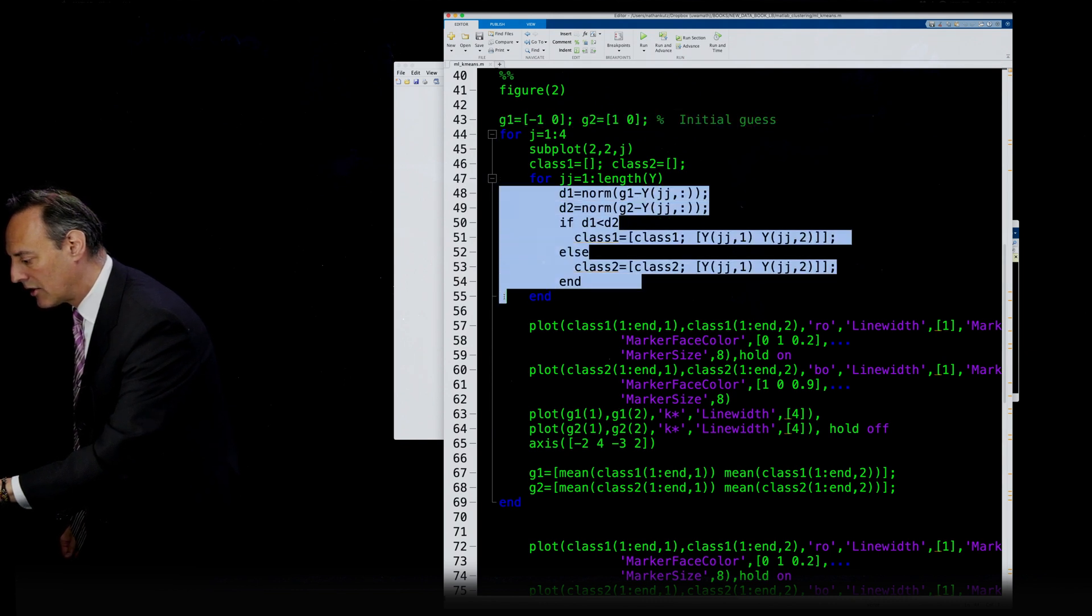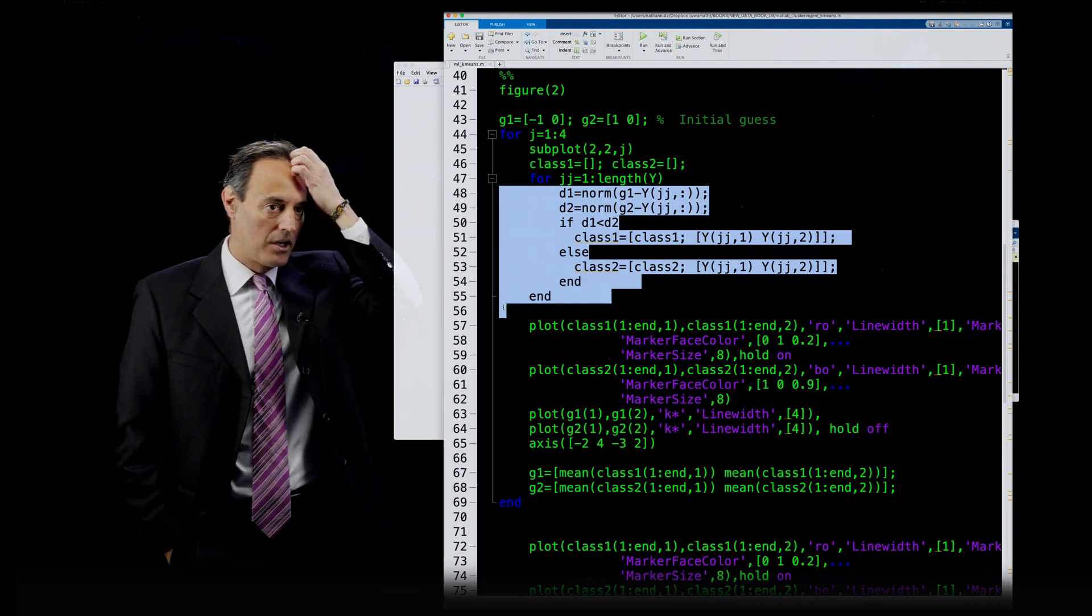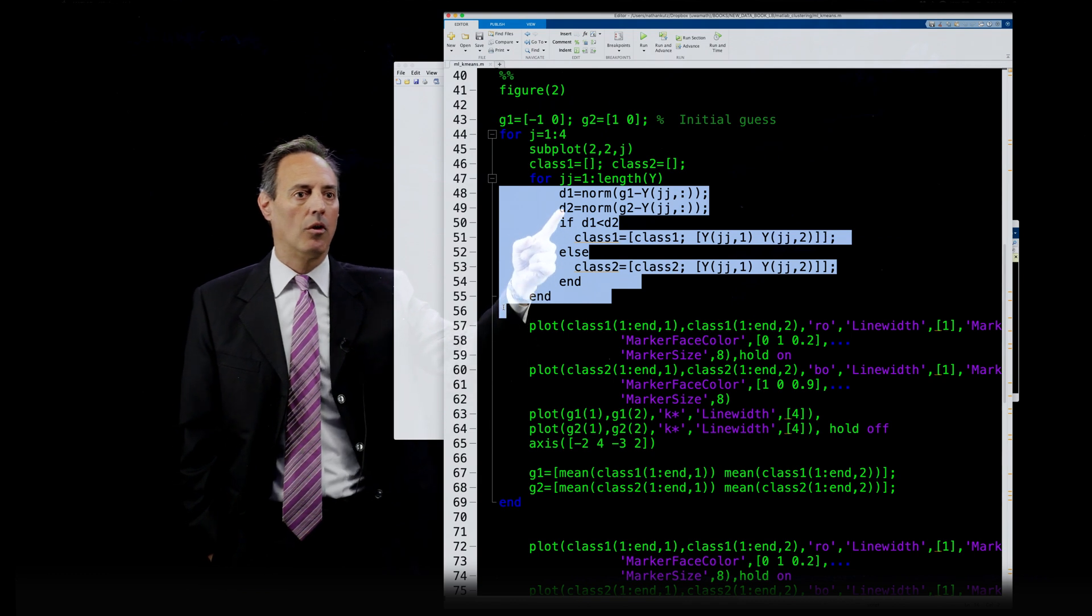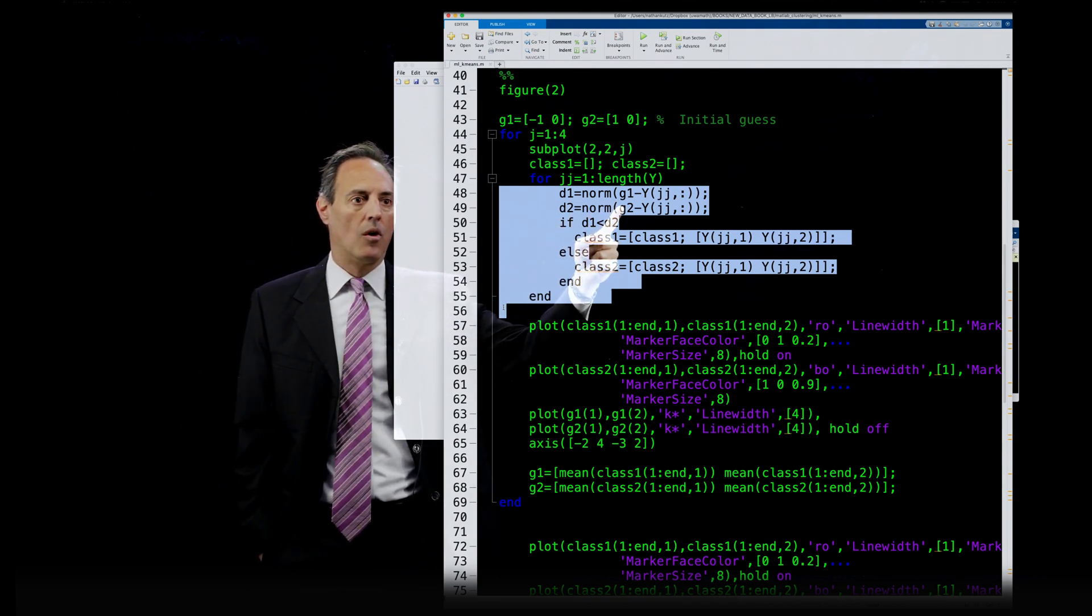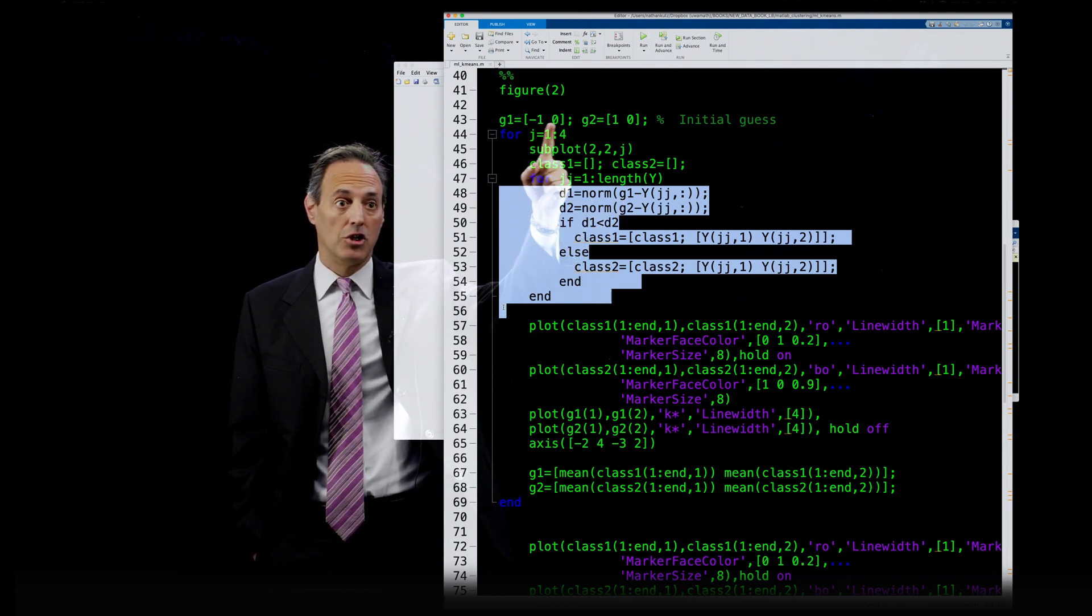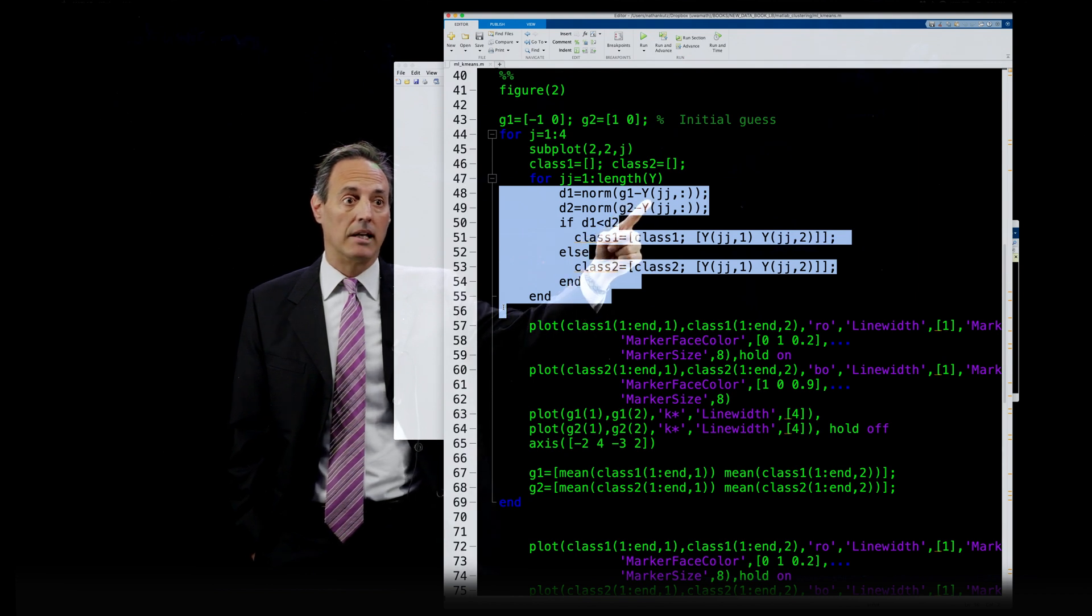And here's what I'm doing and looking at this loop. This is the major part of the loop. So, I'm going to keep track of how things are evolving here, but what I'm doing here is looking at the norm of the distance between where my, so remember, this is my guess G1 and G2.